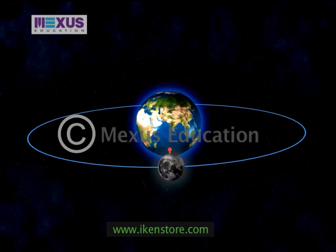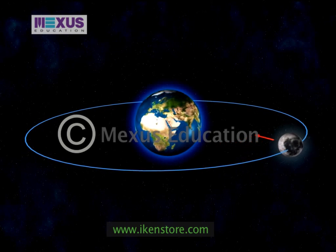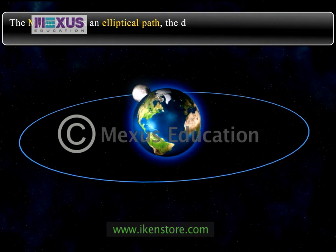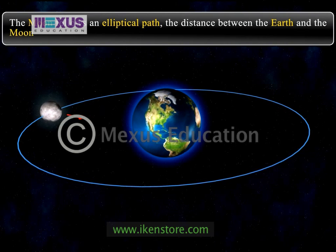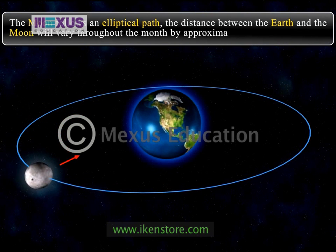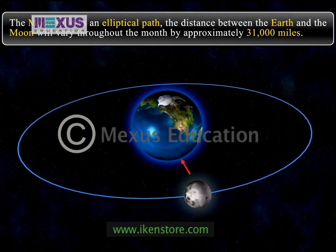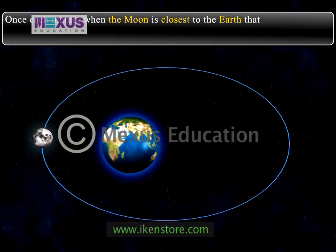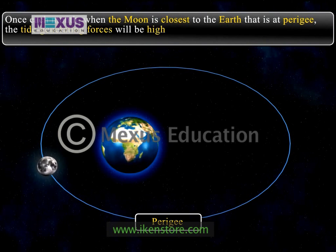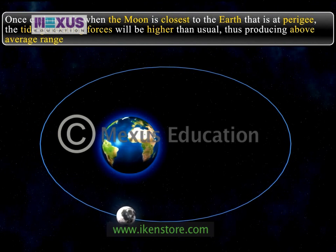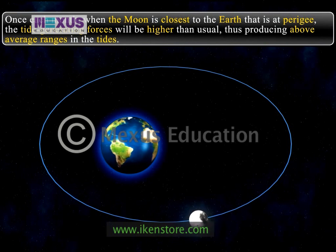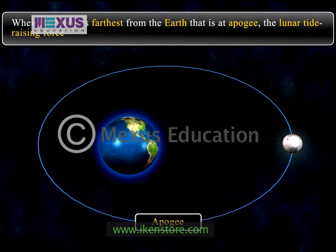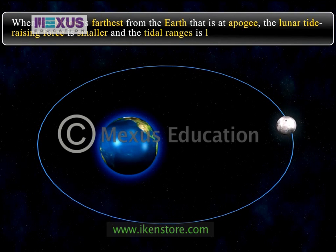The second factor on which the range of the tide depends is the distance of the earth from the moon and the sun. Since the moon follows an elliptical path, the distance between the earth and the moon varies throughout the month by approximately 31,000 miles. Once each month, when the moon is closest to the earth, that is at perigee, the tide generation forces are higher than usual, thus producing above average ranges in the tides. Approximately two weeks later, when the moon is farthest from the earth, that is at apogee, the lunar tide-raising force is smaller and the tidal ranges will be less than average.